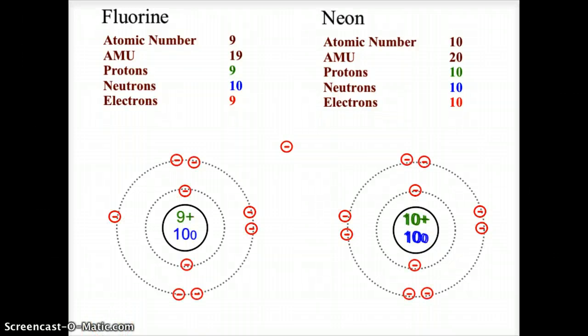Welcome back. Here we have the fluorine and neon models of Bohr's atoms. For fluorine, atomic number 9 means 9 protons — represented as 9+ in the nucleus. The mass is 19, making 10 neutrons, represented as 10 zero. We have 9 electrons: 2 in the first orbital and 7 in the second. When filling the second orbital, we balance electrons one on each side first, then come back and pair them — usually clockwise around the atom.